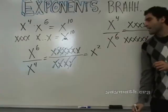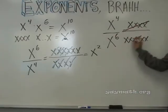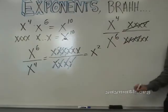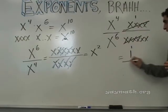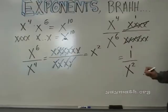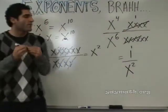And four cancels with four, leaving how many where? Two on the bottom. So this becomes one over x squared. Questions about this? One over x squared.